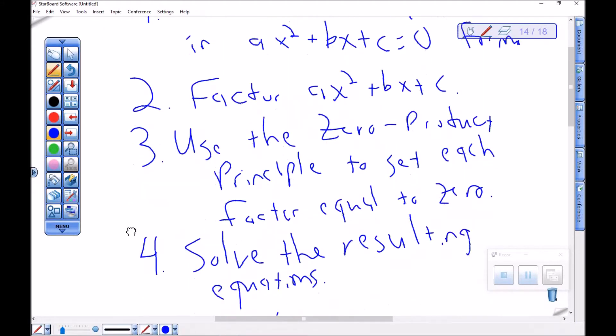Using that zero product principle to set each factor equal to 0 is key here, which is why you have to have it set equal to 0 first. There's no 7 product principle, because if I have two numbers that multiply together to be 7, they could be all kinds of things.